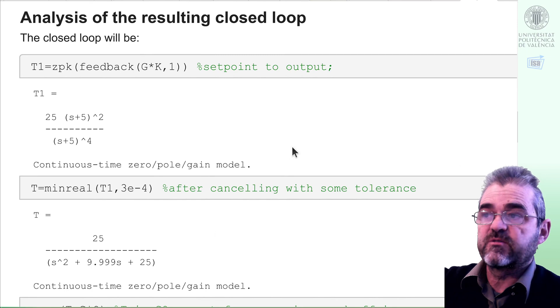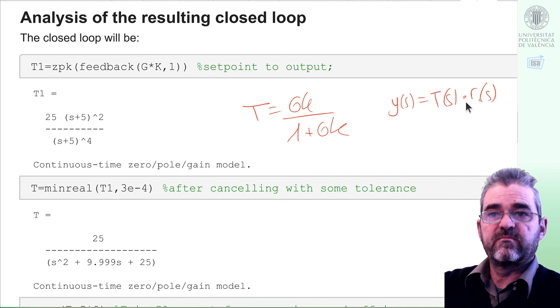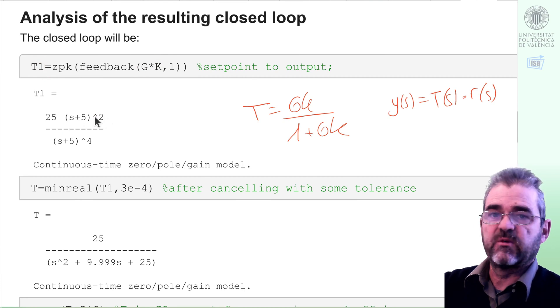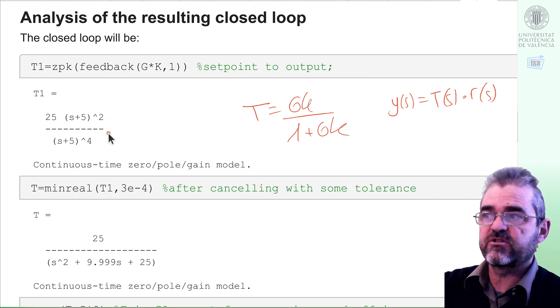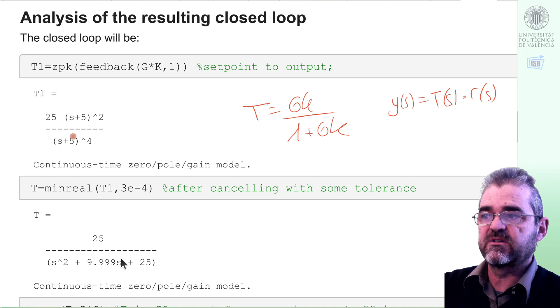First, let us analyze the setpoint response. This would be the transfer function from setpoint to output. With MATLAB's feedback command, we put the direct path GK and the feedback path 1. Okay, this is that T, but I labeled it as T1 because it sort of forgot the cancellation, you know, numerical roundoff issues.